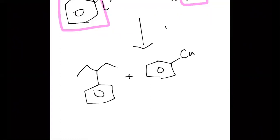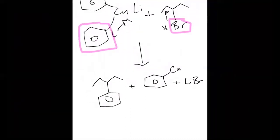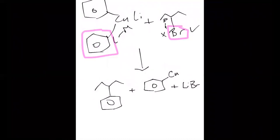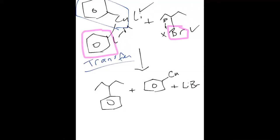Only one of those groups gets transferred when you're using a Gilman reagent, so you'll also get this copper species plus lithium bromide. The bromide and lithium end up together, you end up with this half of the Gilman reagent left, and then you transfer one of those groups to that alkyl halide. That goes back to when we're doing coupling reactions.